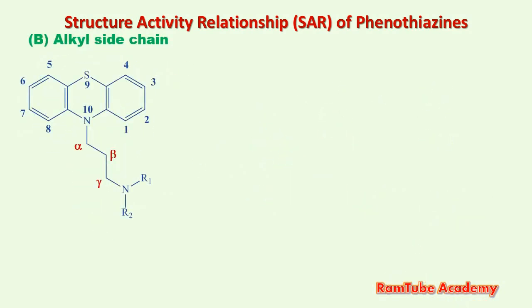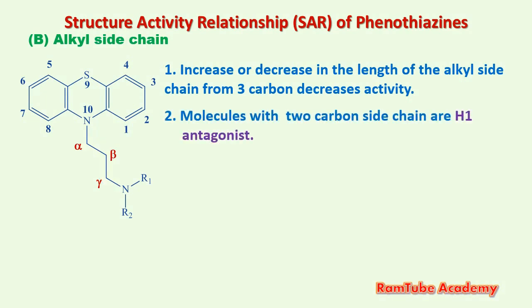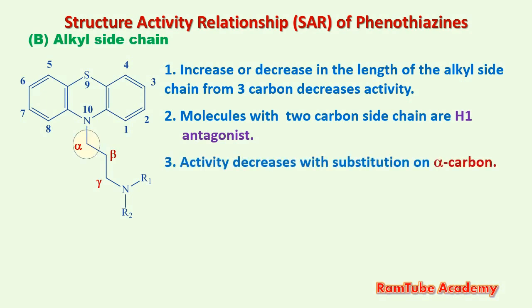The next site for modifications is the alkyl side chain. First: increasing or decreasing the length of the alkyl side chain from three carbons decreases the activity — conversion of propyl to ethyl or butyl decreases activity. Second: molecules with a two-carbon side chain are actually H1 antagonists and are not dopamine D2 blockers.